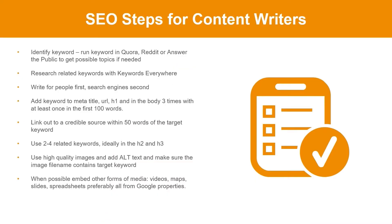Here's a quick cheat sheet — SEO steps for content writers. Identify a keyword. Run it in Quora, Reddit, or Answer the Public to get possible topics. Research related keywords with Keywords Everywhere. Write for people first, search engine second. Add the keyword to the meta title, URL, H1, and in the body three times with at least once in the first 100 words. Link out to a credible source within 50 words of the target keyword. Use two to four related keywords ideally in the H2 and H3. Use quality images, add alt text, and make sure the image file name contains the target keyword. When possible, embed other forms of media like videos, maps, slides, and spreadsheets, preferably all from Google properties.